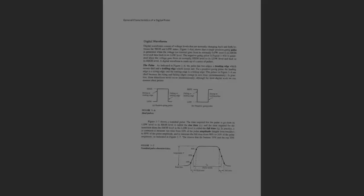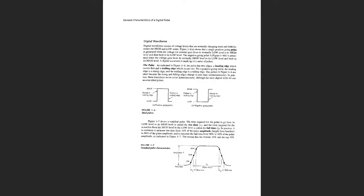To understand data transfer, we first need to look at something called a digital pulse. In figure 1-6, they show two types of ideal pulses and, at the bottom of the page, a non-ideal pulse. In this class we'll always deal with ideal quantities — we'll say exactly five volts is a one and exactly zero volts is a zero — and assume we have perfect waveforms or perfect pulses.